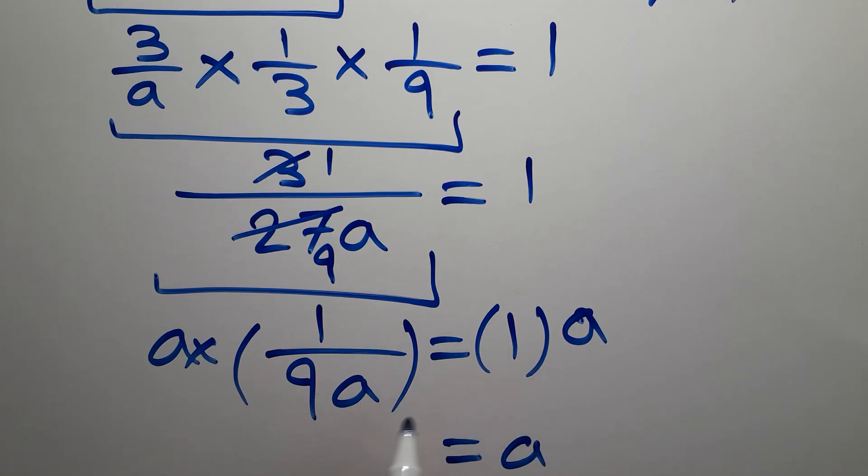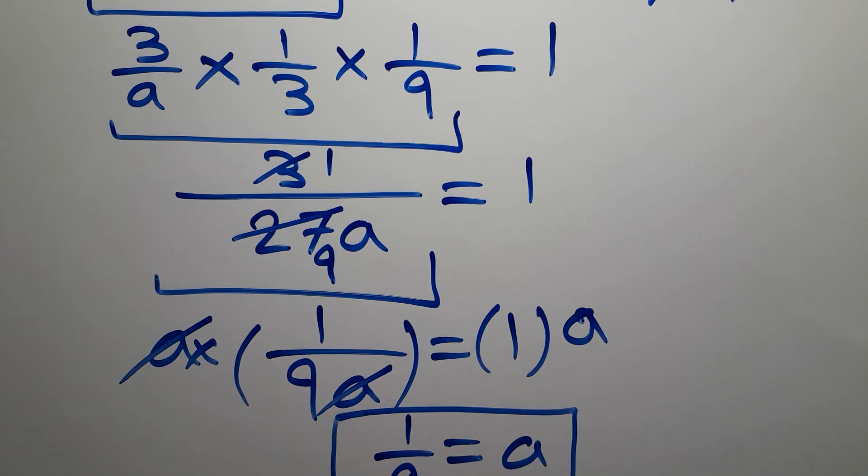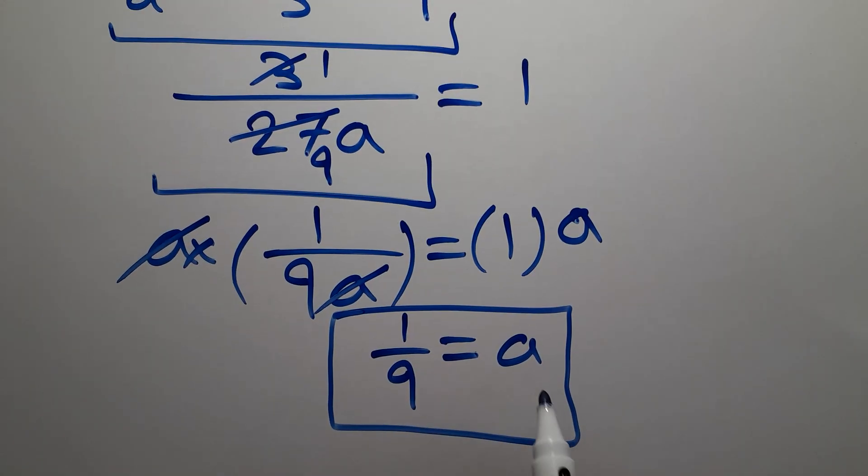On the left hand side, this a and this a can cancel each other out, so we have just 1 over 9. So we have just 1 over 9, and this is our final value for a. a is equal to 1 over 9.